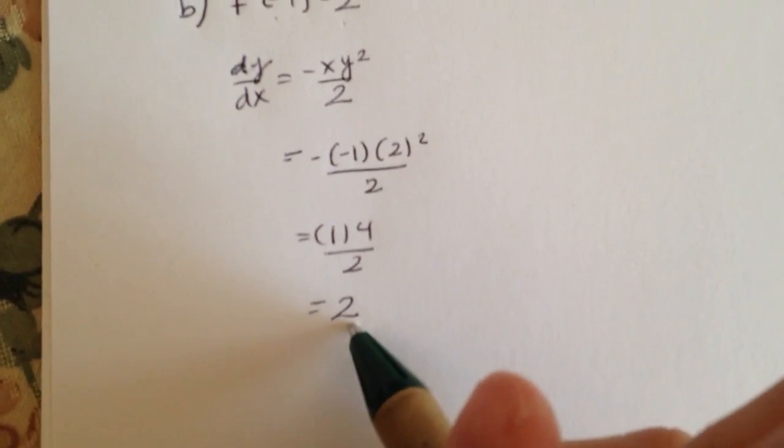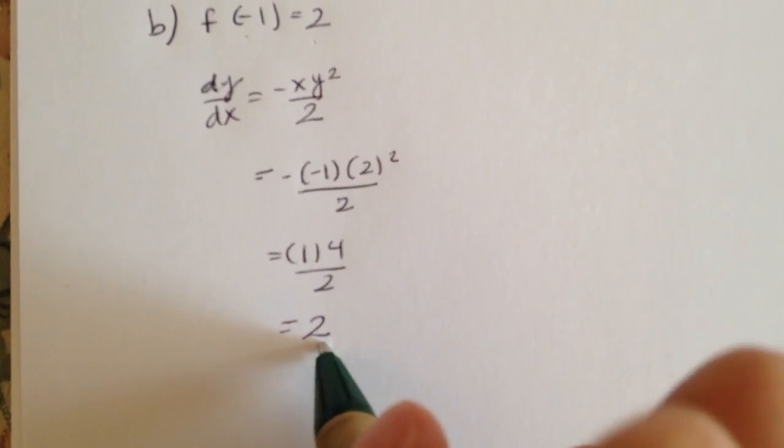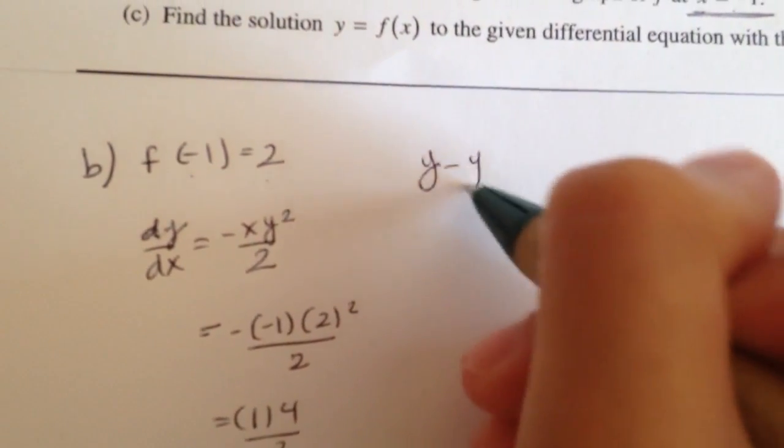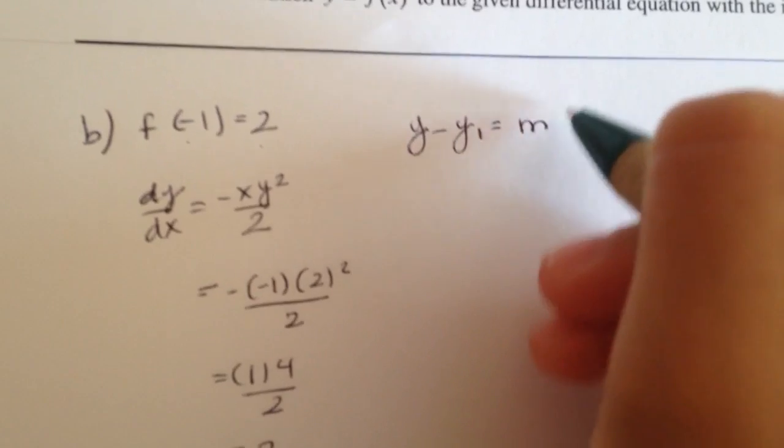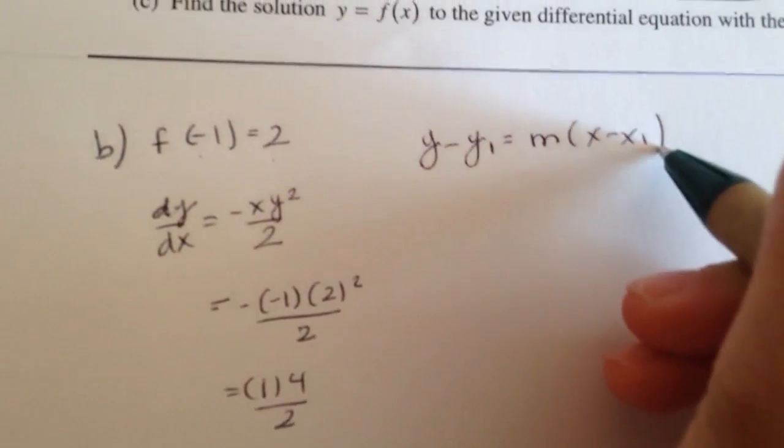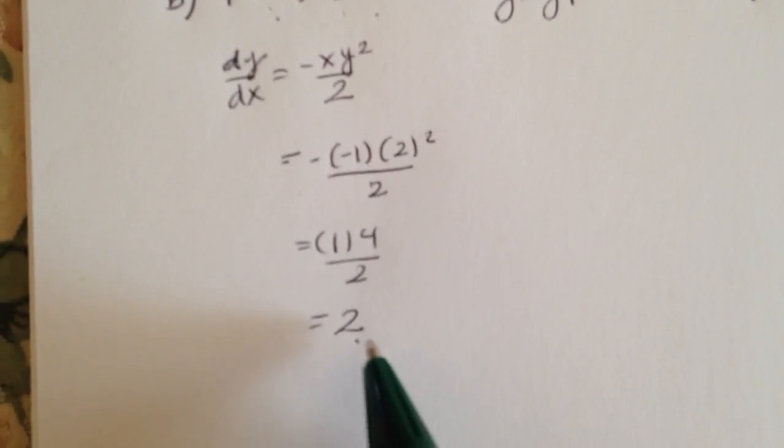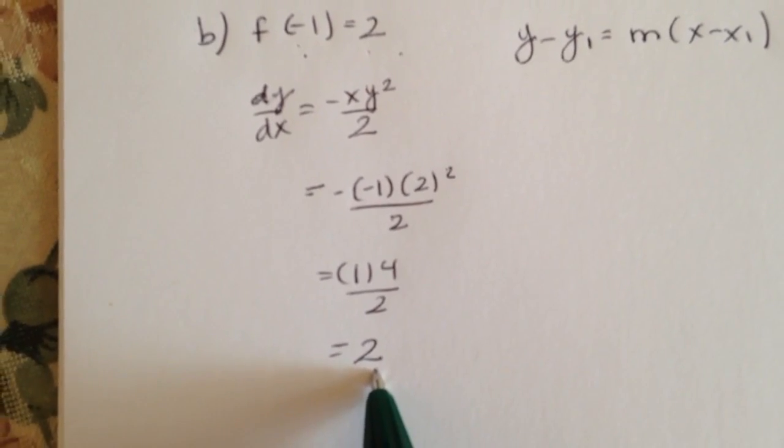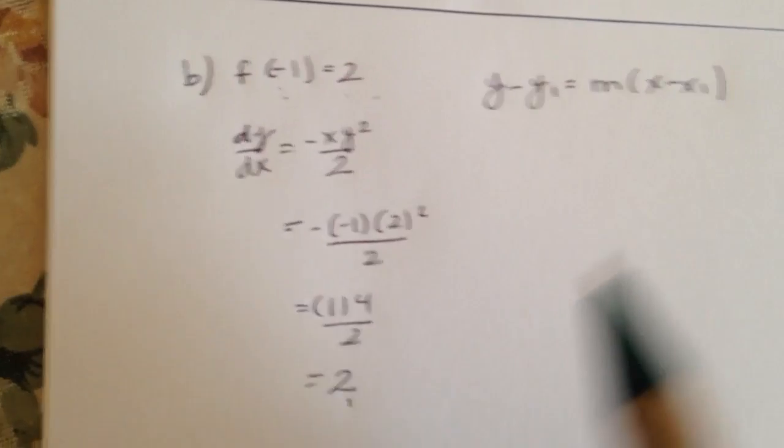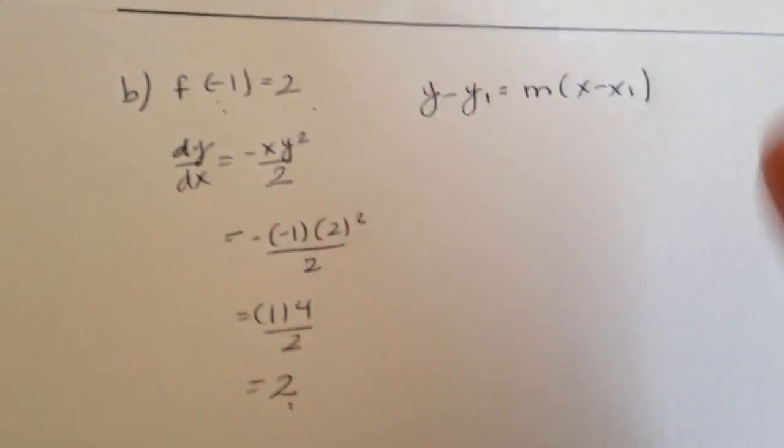So once you end up with your answer, use the point-slope form, which is y minus y1 equals m times x minus x1. Since you already have your x and your y, this, your 2, your final answer, is going to be your slope. So you just plug it in to this equation.